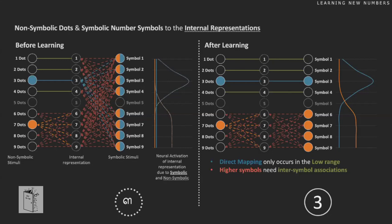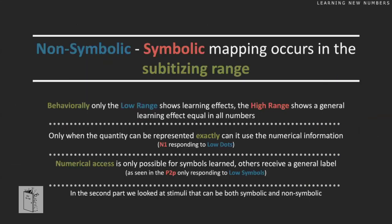In conclusion: behaviorally, only the smaller numbers show learning effects, while the higher range shows only a generic learning effect. The brain data tells us that quantities can only be represented exactly in the low range — confirmed by the first ERP component — and that numerical access is only possible for symbols that have been learned, which was also only the small numbers.